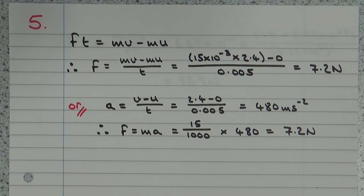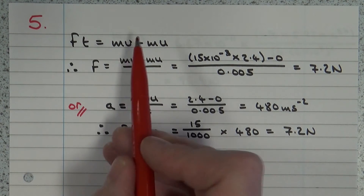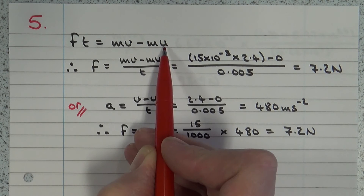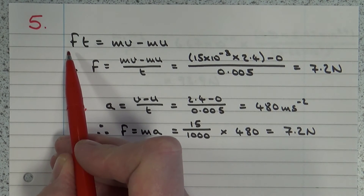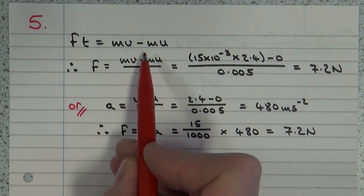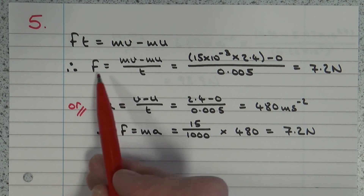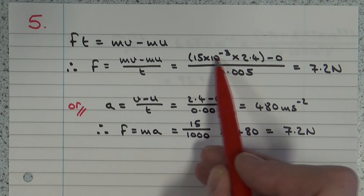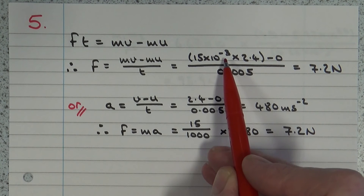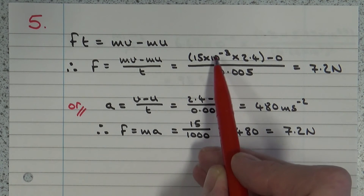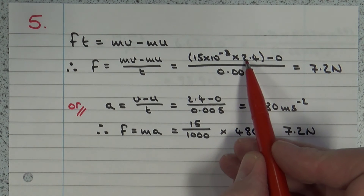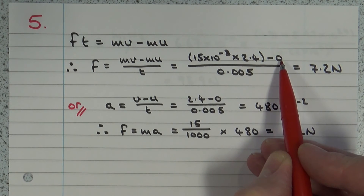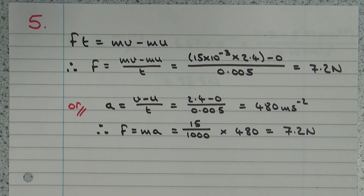Question number 5 is an impulse question. Impulse equals change in momentum: mv − mu, and also equals average force multiplied by time. Rearranging gives F = (mv − mu) / t. Converting 15 grams to kilograms — 15 × 10⁻³ kg — multiplied by final velocity 2.4, with initial velocity zero, divided by time, gives a force of 7.2 newtons.